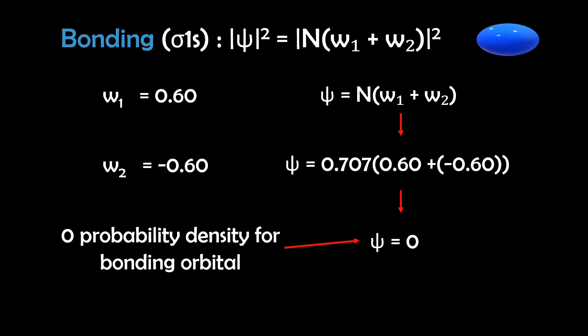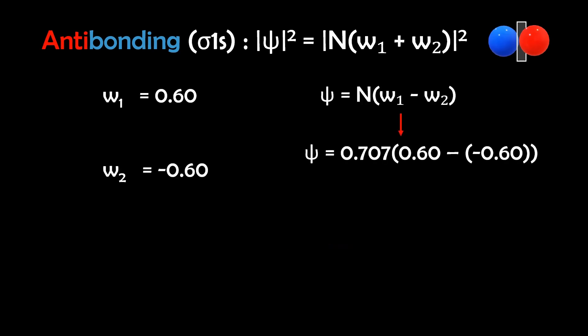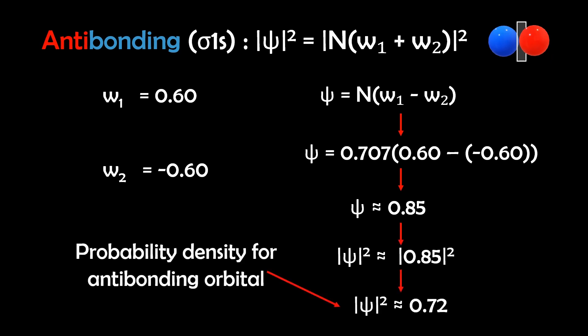But for the antibonding orbital, we have ψ equals 0.707 times 0.60 minus negative 0.60, which actually gives us 0.85. And the absolute value squared of that is approximately 0.72. And this means with an out of phase wave function, we have higher electron density, but now outside the bonding region or in the antibonding orbital.